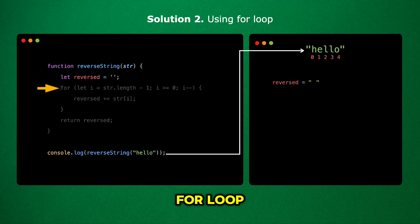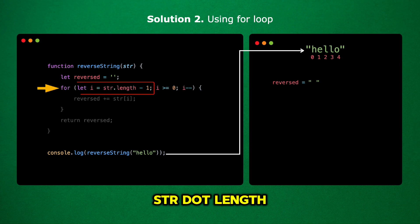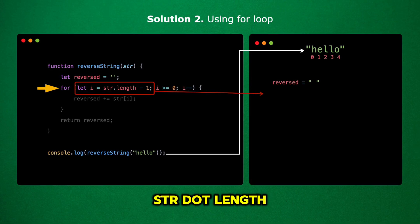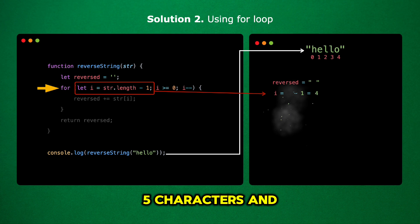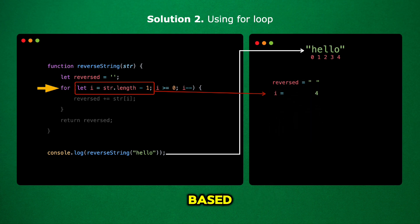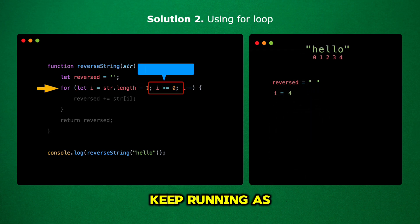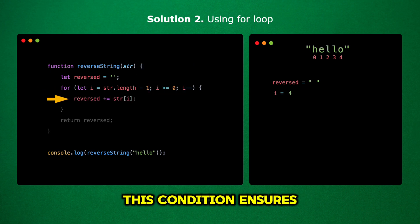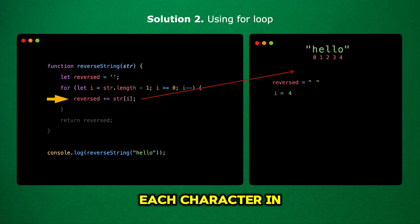Next, we have this for loop. We start by setting i to str.length - 1, which means i will initially be the index of the last character in the string. For example, if our string is 'hello', str.length - 1 will be 4, because 'hello' has five characters and indexes are zero-based. The loop will keep running as long as i is greater than or equal to zero. When i becomes less than zero, the loop stops. This condition ensures that we go through each character in the string from the last one to the first.